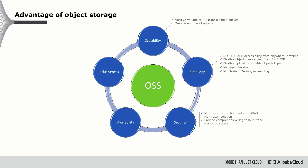For security, OSS provides multi-layer protection against DDoS. It provides multi-user isolation and comprehensive logs to help trace malicious access. For availability, all data stored on OSS is replicated in three different places, and it provides 99.7% data reliability and 99.9% service availability. The service can automatically expand and automatically fail over if you enable cross-region replication.